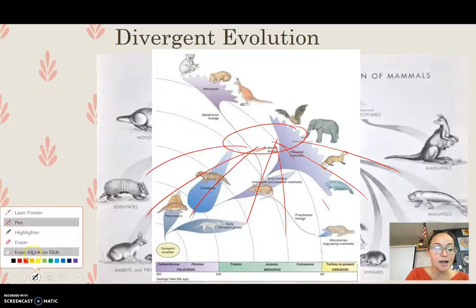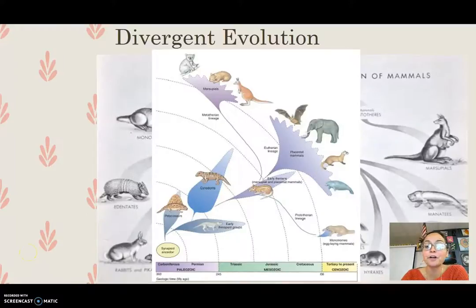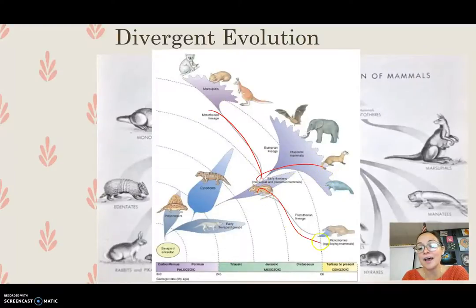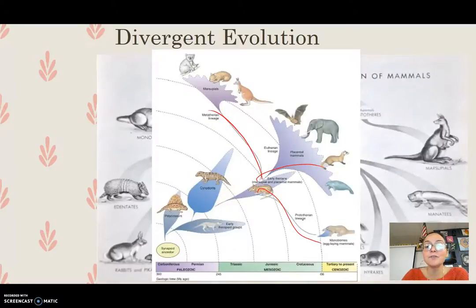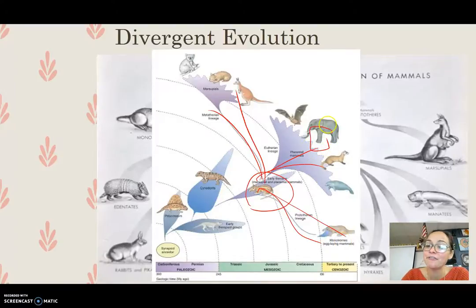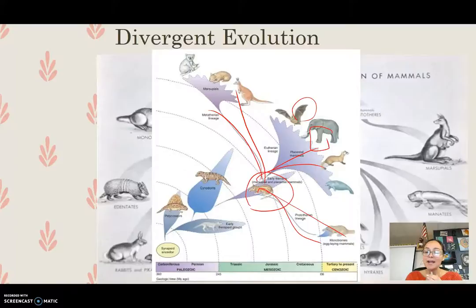Looking at the ancestral mammal with fur and mammary glands, we can see the branching of marsupials, placental mammals, and monotremes — the egg-laying mammals like the duck-billed platypus. In divergent evolution, you start with a common ancestor and then diverge to become different. Even though the legs of an elephant and the wing of a bat have incredibly different adult structures, their common ancestry is shown in their fossils and bone structure, having the similar bones but evolved to different adult forms.